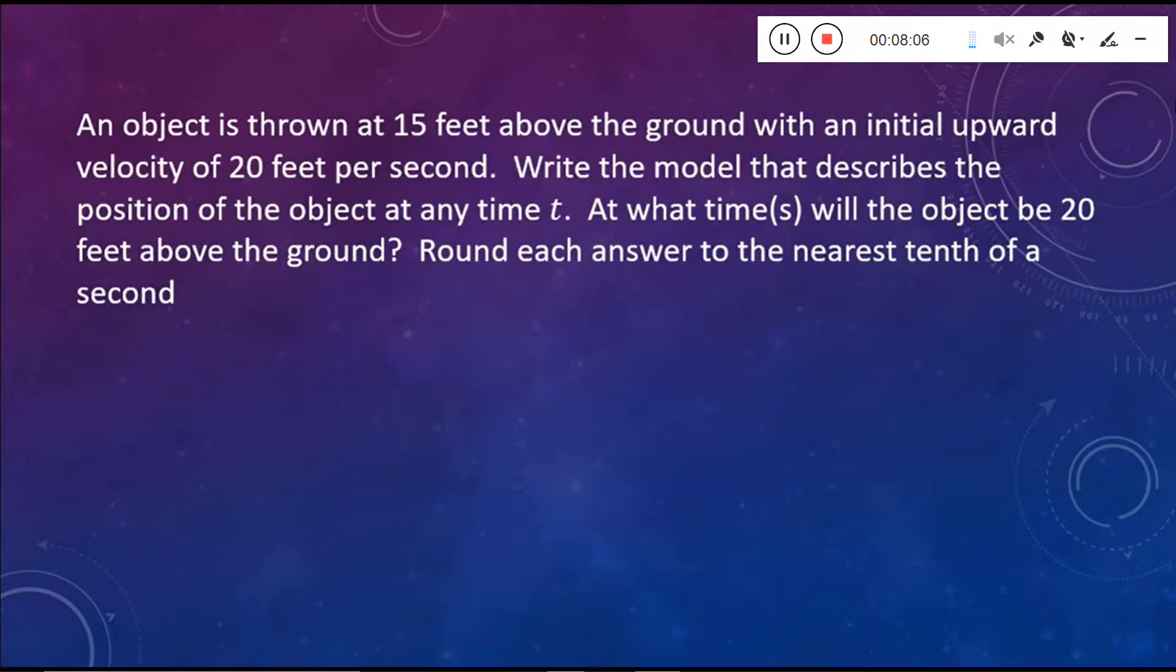So here's another question a little bit more involved this time. An object is thrown at 15 feet above the ground with an initial upward velocity of 20 feet per second. Write the model that describes the position of the object at any time t. At what time or times will the object be 20 feet above the ground? Round each answer to the nearest tenth of a second. So in this case, we have to build the model given the information in the problem. We're not handed the model to us. We need to build it.